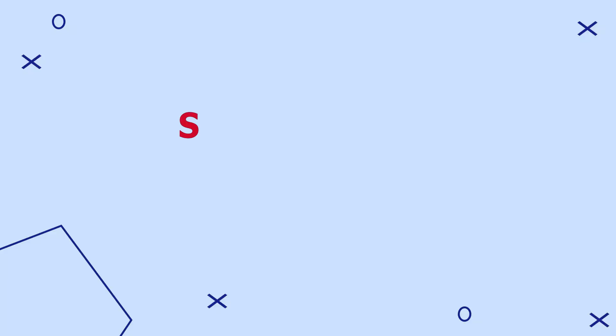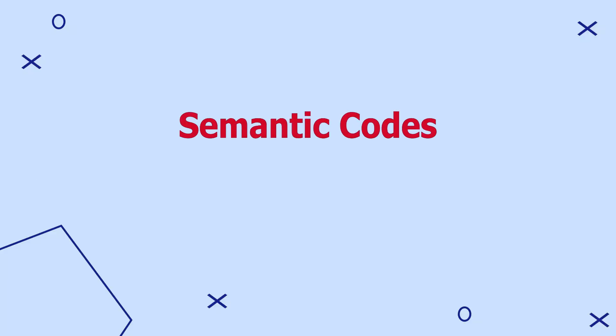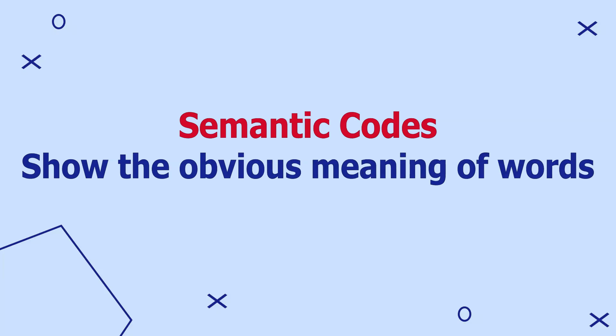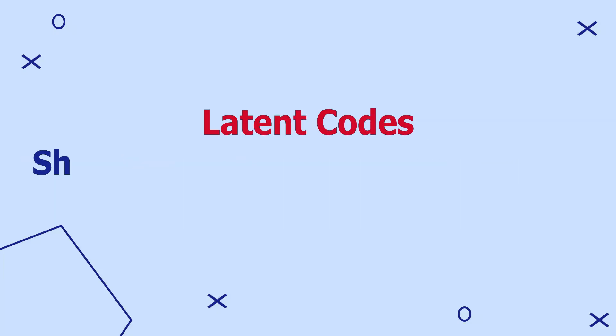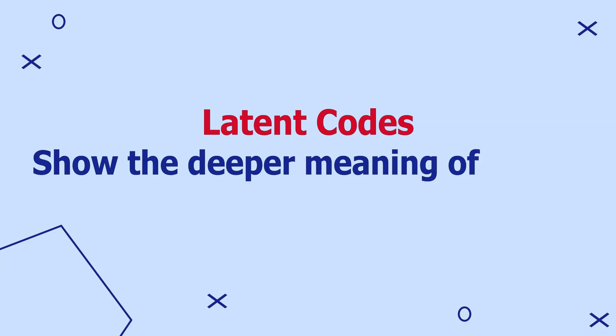Also remember, there are two types of codes: semantic codes, which show the obvious meaning of words, and latent codes, which show the deeper meaning of certain statements or words.